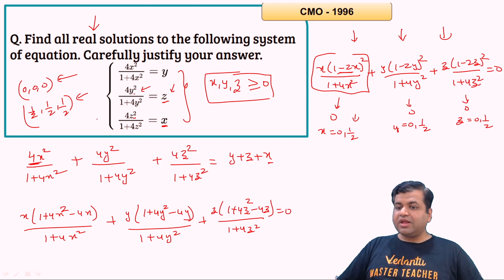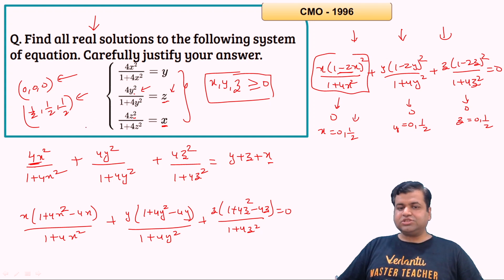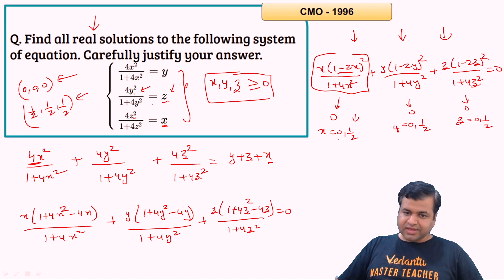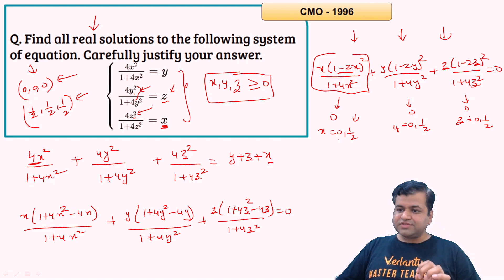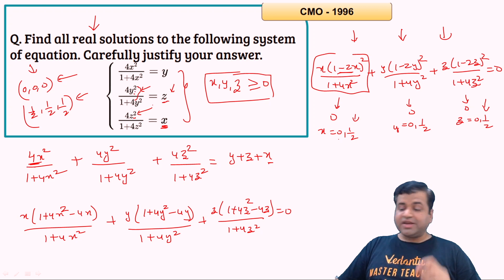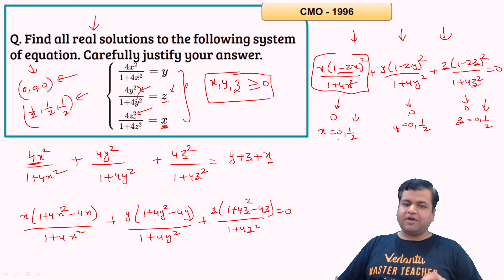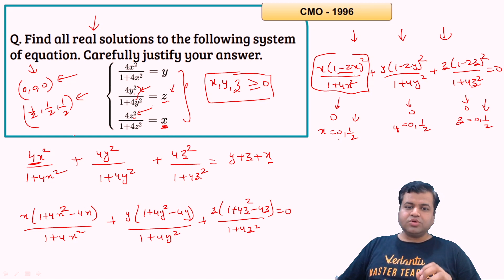This system has exactly two distinct solutions. If x = 0, then z = 0 and y = 0. If x = 1/2, then z must be 1/2 and y must be 1/2. So the only two solutions are (0, 0, 0) and (1/2, 1/2, 1/2).